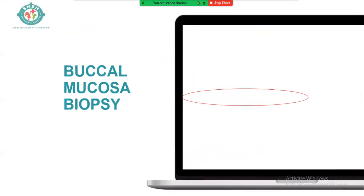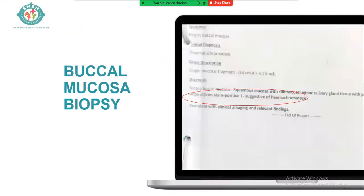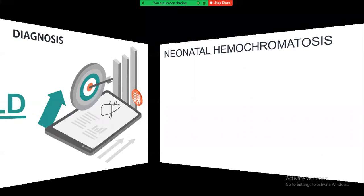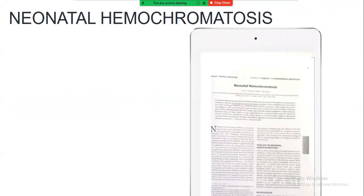A buccal mucosa biopsy was also done, which showed iron deposition with findings suggestive of hemochromatosis. With evidence of both hepatic and extrahepatic iron deposition, the diagnosis was clinched: neonatal hemochromatosis, or gestational alloimmune liver disease (GALD). I hope many of you had this in your differentials. The key goal of this case was to highlight the approach — any child with neonatal liver failure should have GALD as a differential.